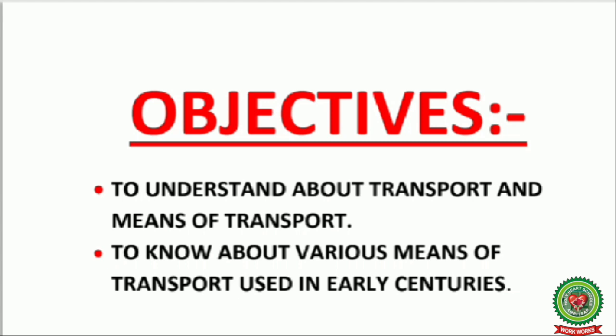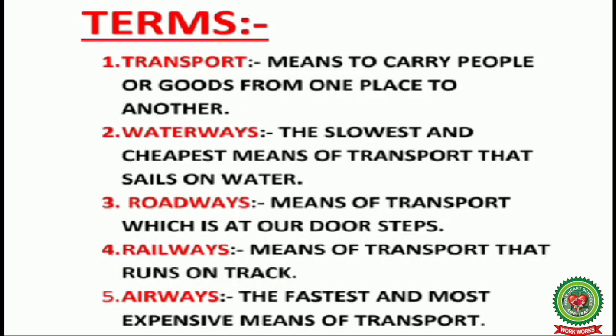First: transport means to carry people or goods from one place to another. Second: waterways - the slowest and cheapest means of transport that sails on water. Third: roadways - means of transport which is at our doorsteps. Fourth: railways - means of transport that runs on track. Fifth: airways - the fastest and most expensive means of transport.